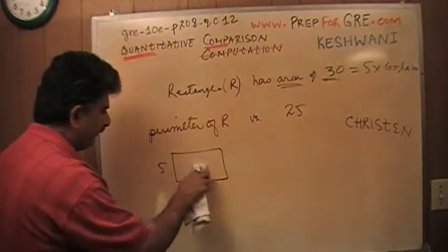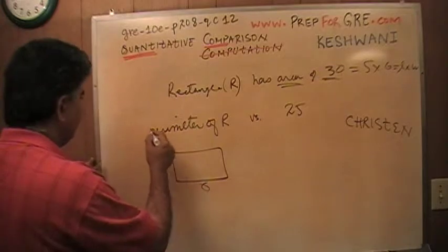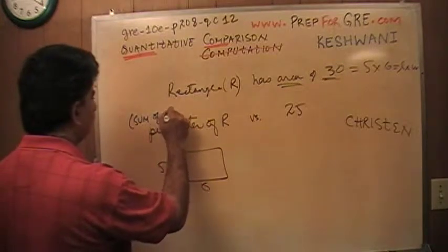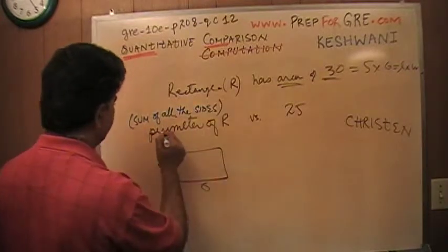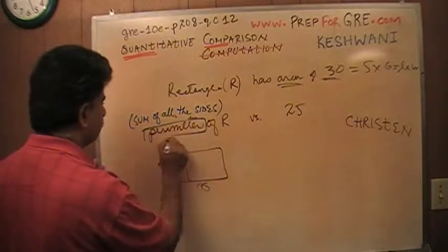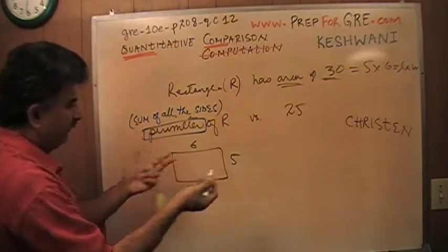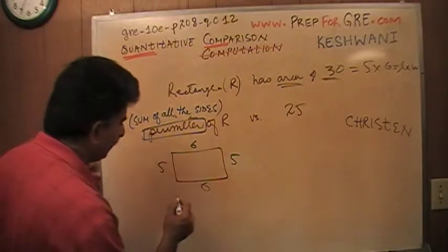Let's find out the perimeter of this thing. The perimeter simply means sum of all the sides. So this is 5, this is 6, this is 5 and this is 6 because it is a rectangle. This side is equal to this side and this side is equal to this side.